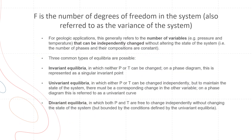Finally, F is the number of degrees of freedom within the system, also referred to as the variance of the system. In geologic applications, this refers to the number of variables — pressure and temperature usually — that can independently be changed without altering the state of the system.